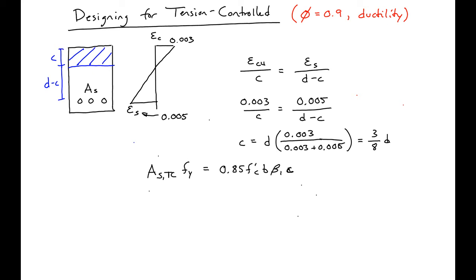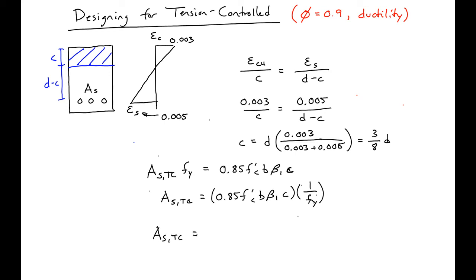We can solve for AS_tension-controlled, which will be equal to 0.85 f'c times b times β1 times C, all divided by Fy. Plugging in our value of C equal to three-eighths D gives us AS_tension-controlled as a function of the section and material properties.